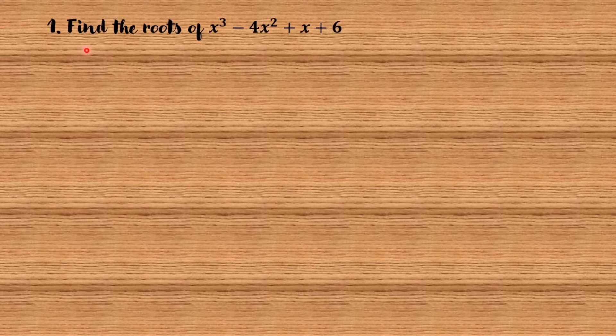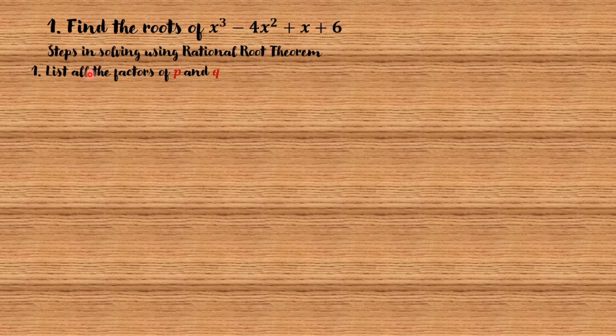Number 1: Find the roots of x cubed minus 4x squared plus x plus 6. Here are the steps in solving using the Rational Root Theorem. Step 1: List all the factors of p and q.